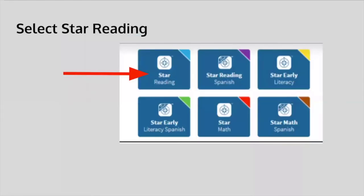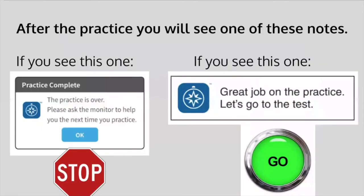Select the STAR Reading test. After the practice, you will see one of these messages. If you see the message on the left that practice is complete and you need to ask a monitor for help, you will need to let your teacher know. If you see the message on the right — great job on the practice, let's go to the test — you can go on and begin your test.